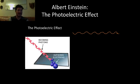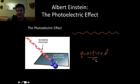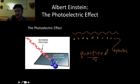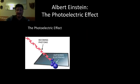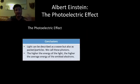So for that to happen, light should also be what he would later call quantized. He described light as these measurable, quantized particles called photons. We call these photons today. So, not only can light be described as a wave, but it can also be described as packets or particles. We call these photons. He also said that the higher the intensity of the light, then the higher the average energy of the emitted electrons.